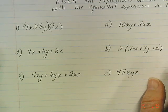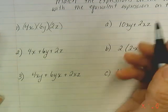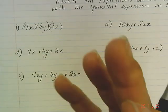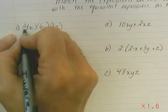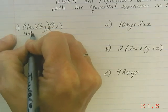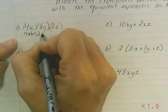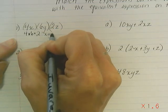4x times 6y times 2z. I can use the commutative property to rearrange the numbers and rewrite this as 4 times 6 times 2 times x times y times z.